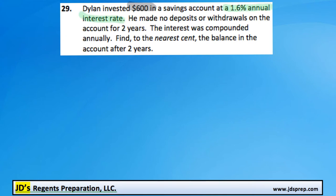He made no deposits or withdrawals in the account for two years, and the interest was compounded annually. What we need to find is the balance in the account after two years.